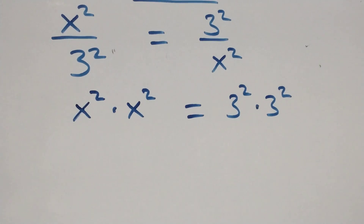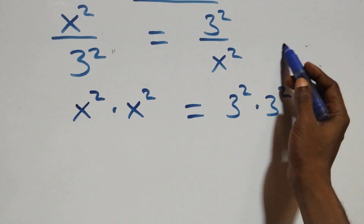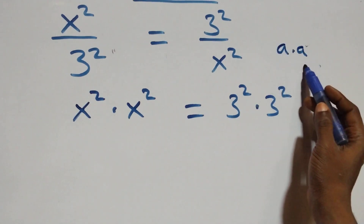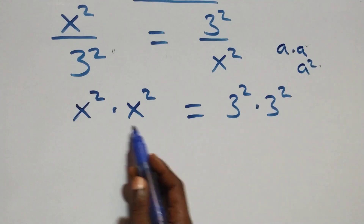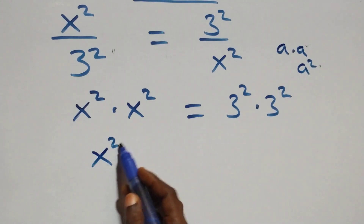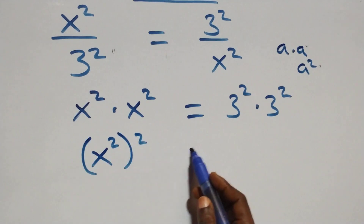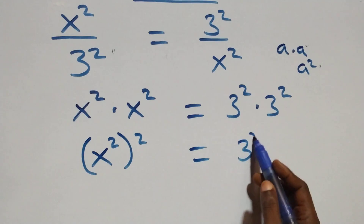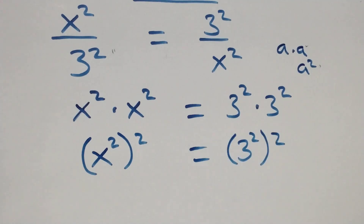Now let's continue. Next step here. This also follows when we have a times a, which can be written as a squared. Same thing multiplying, you can write it as x squared or squared, equals to here also we have 3 squared or squared.